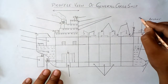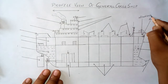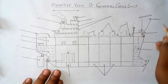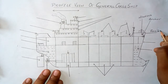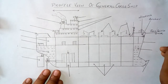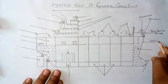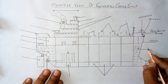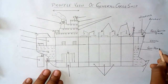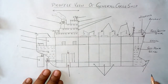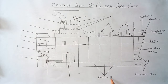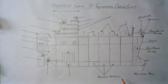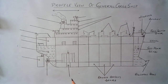Now it is time for labeling. We label the anchor, the windlass, the forecastle deck, the stem, the fore peak tank used for ballasting, the bulbous bow, and the double bottom tank also used for ballasting of the ship.